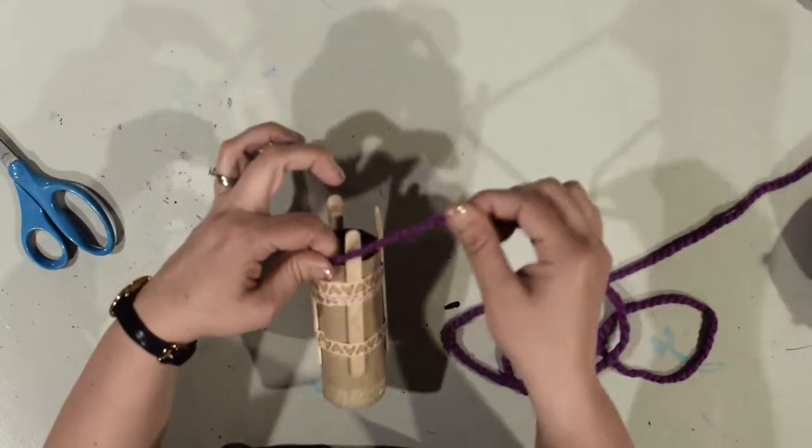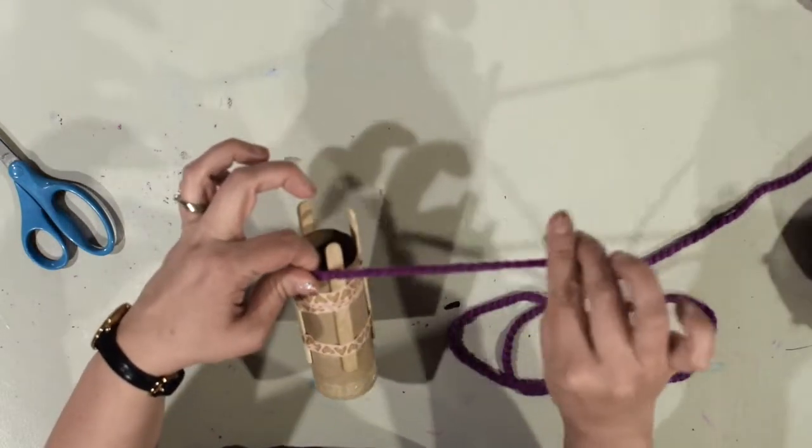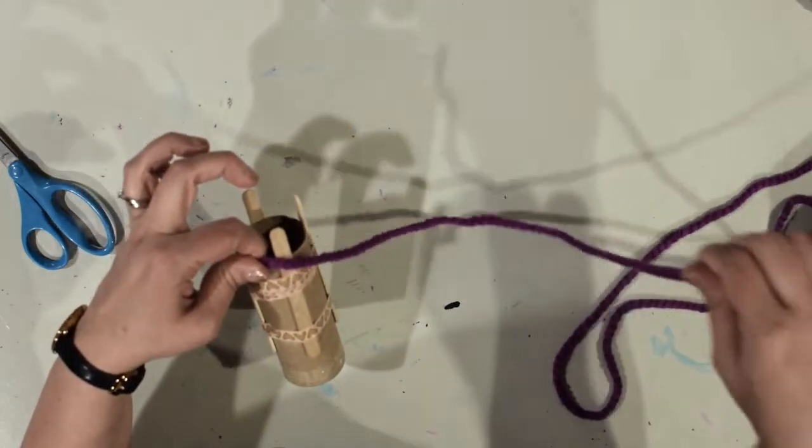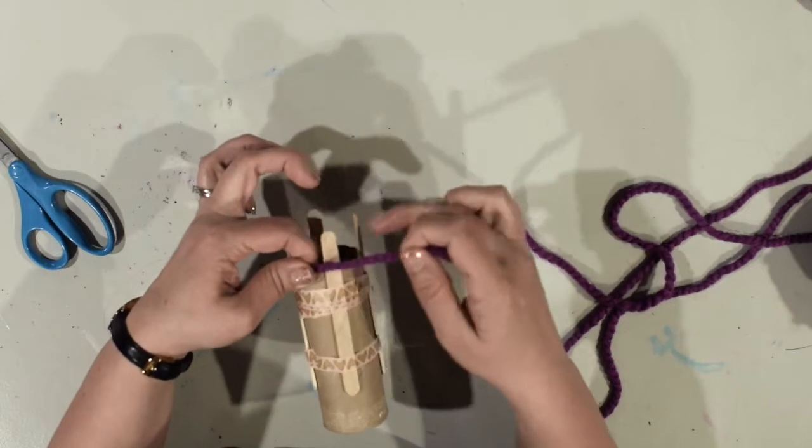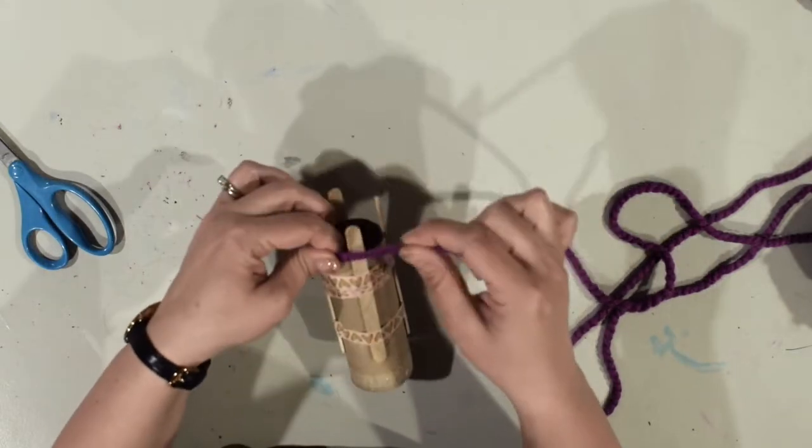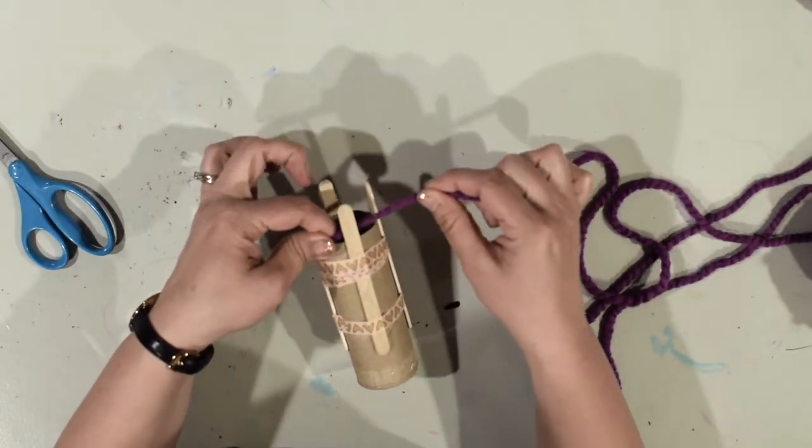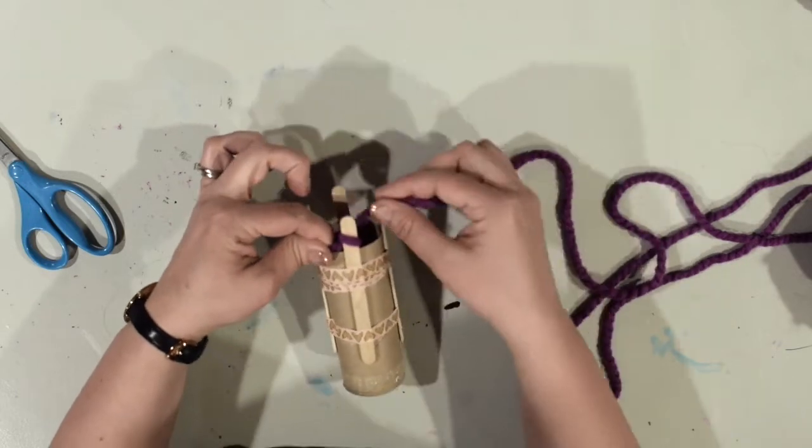Okay, so what I'm going to do is I'm going to take this yarn right here. So notice where I'm holding it - I'm not holding it way back here, I'm holding it kind of just a few inches away from where my other fingers are pinching. I'm going to take it behind the popsicle stick and wrap it around.